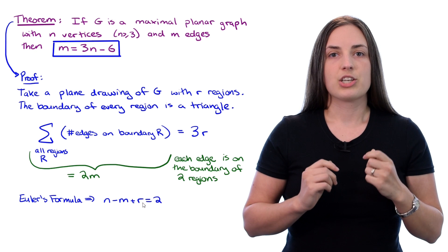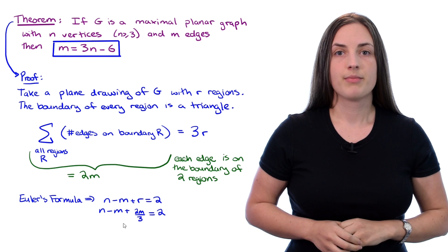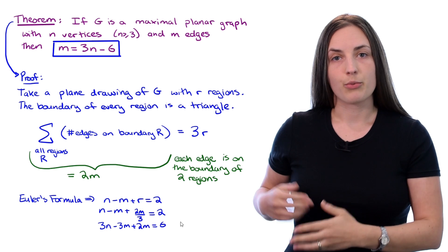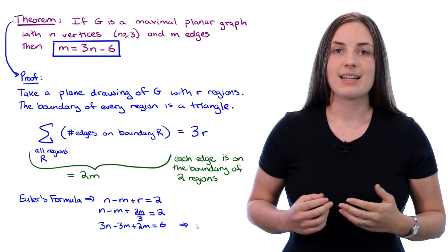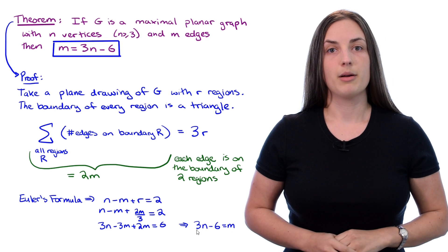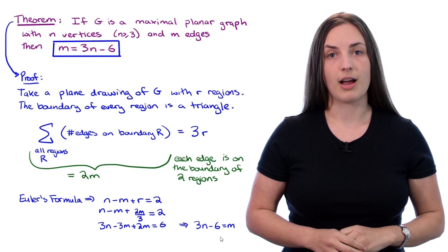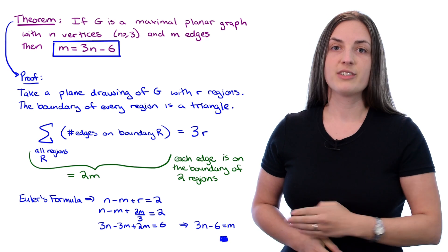But now we have a relationship telling us what R is in terms of M, so we'll just plug that in. And when we simplify and rearrange it, you get exactly that 3 times N minus 6 equals M. So you can tell exactly the number of edges that will be in a maximal plane graph on N vertices. And the proof is done.